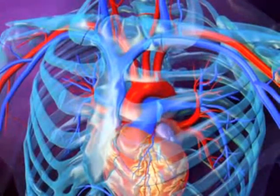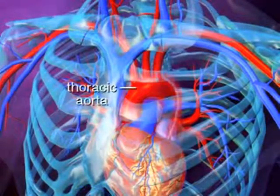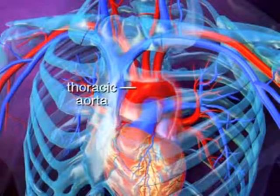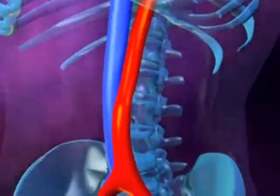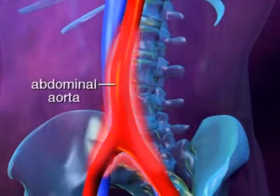It is divided into two main sections. The thoracic aorta, which runs down the center of the chest, and the abdominal aorta, which is the lower section located in the abdomen.